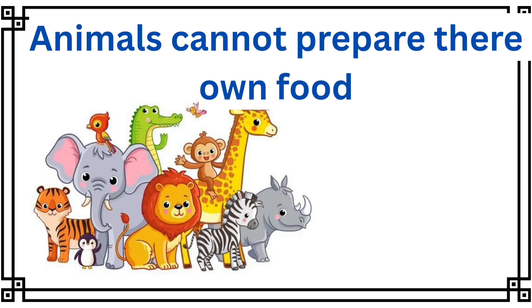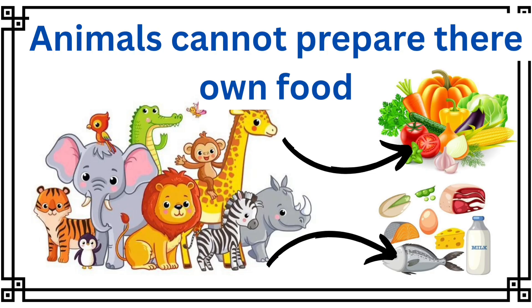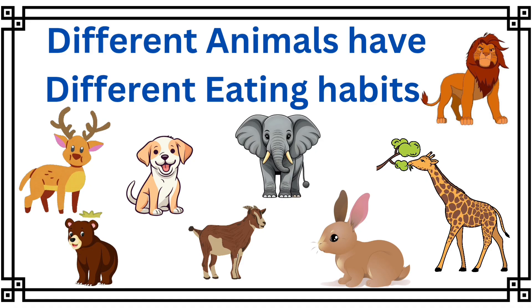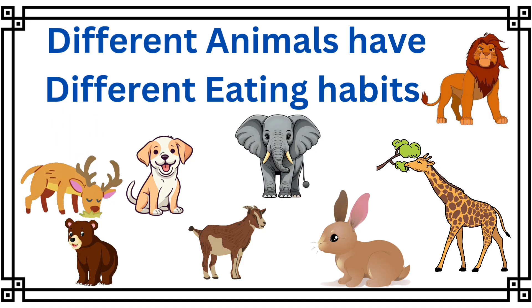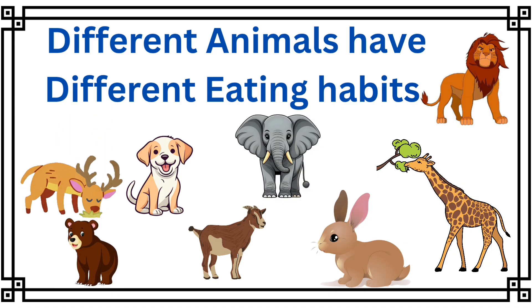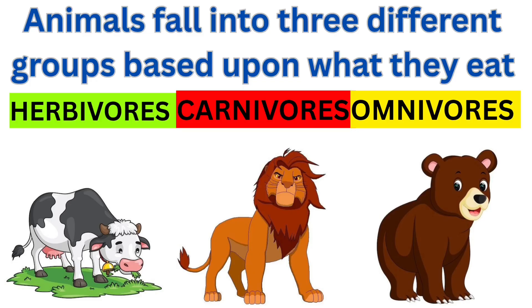Animals cannot prepare their own food, so they depend upon plants and other animals for their food. Different animals have different eating habits, and on the basis of their eating habits we can categorize these animals into three groups: herbivores, carnivores, and omnivores.